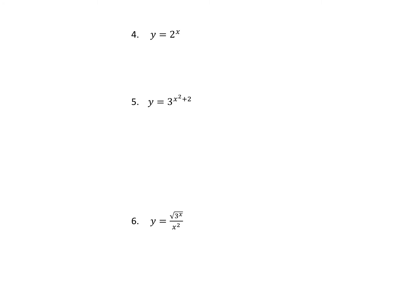For an exponential equation with a different base, such as y equals 2 to the x, the derivative rule is: keep 2 to the x as is and multiply by ln(2). If the exponent is a function g(x), then we leave the exponential as is, multiply by ln of the base (ln 3), and then multiply by the derivative of g(x), which would be 2x.